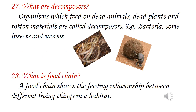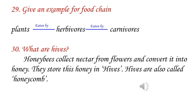What are decomposers? Organisms which feed on dead animals, dead plants and rotten materials are called decomposers — example: bacteria, some insects and worms. What is a food chain? A food chain shows the feeding relationship between different living things in a habitat. For example, plants are eaten by herbivores, and herbivores are eaten by carnivores.